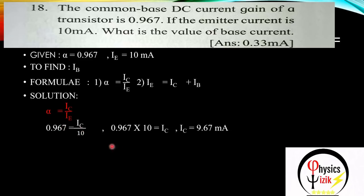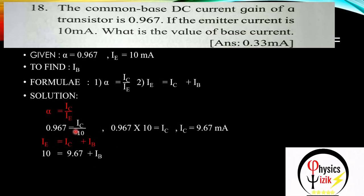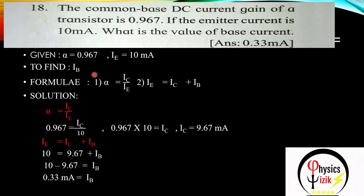To find IC, multiply: IC = 0.967 × 10 = 9.67 milliampere. Now using the second equation IE = IC + IB: 10 = 9.67 + IB. Taking 9.67 to the left-hand side: IB = 10 − 9.67 = 0.33 milliampere. That is your base current. Very simple sum — if you know the formula, it is very easy.